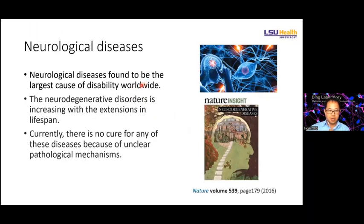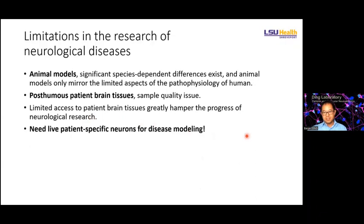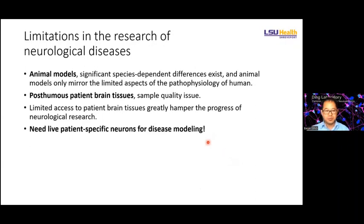We already talked a lot about neurological diseases, including Alzheimer's disease and Parkinson's disease. These kinds of diseases are a big challenge worldwide. Unfortunately, there is no cure for these diseases because the pathogenesis is not clear. For neurological disease research, there are some challenges and limitations in the current model system.